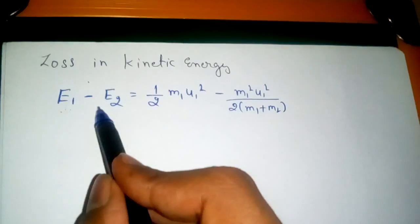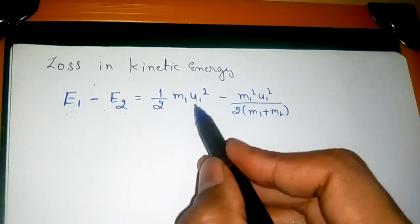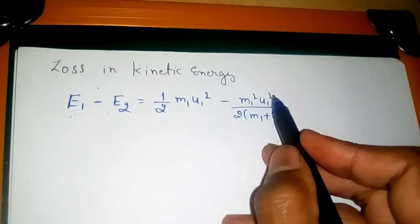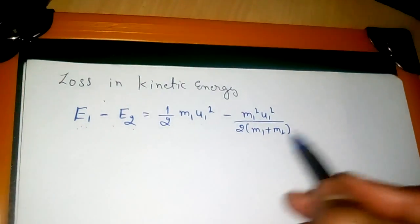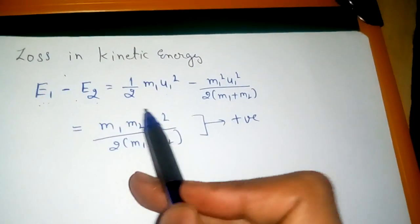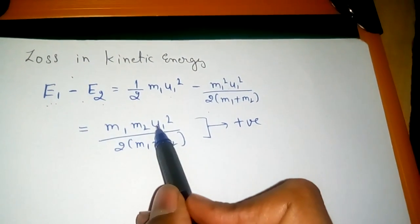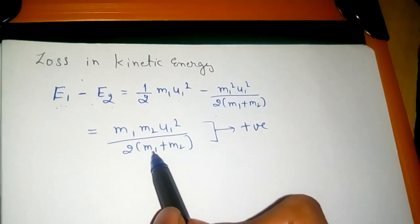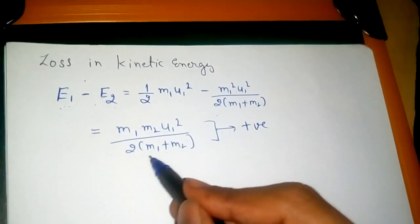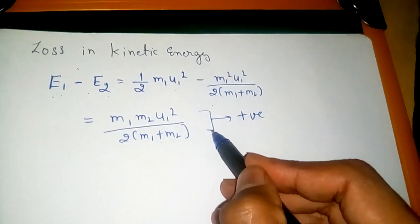So the final loss in kinetic energy can be calculated as e1 minus e2 is equal to half m1 u1 square minus m1 square u1 square upon 2 m1 plus m2. This equation will further and finally get reduced to m1 m2 u1 square upon 2 into m1 plus m2.